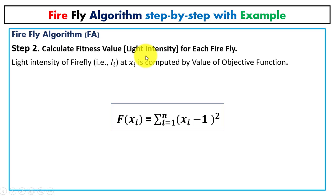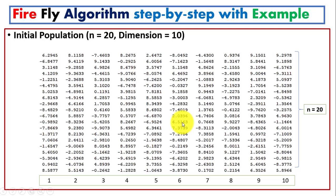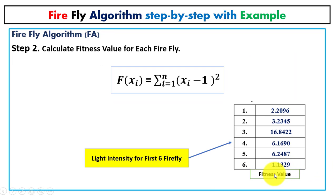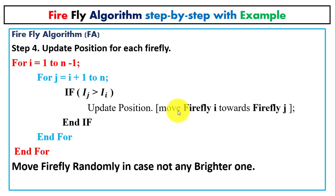Step two is to compute the fitness value, also called the light intensity value, for each firefly. This lets us determine which firefly is brighter and which is less bright. We use an objective function for this computation. For simplicity, I am using just six fireflies for comparison, to show how we can update the position and light intensity. Initially the counter is one, the condition is true, so we move to the next step to update position.